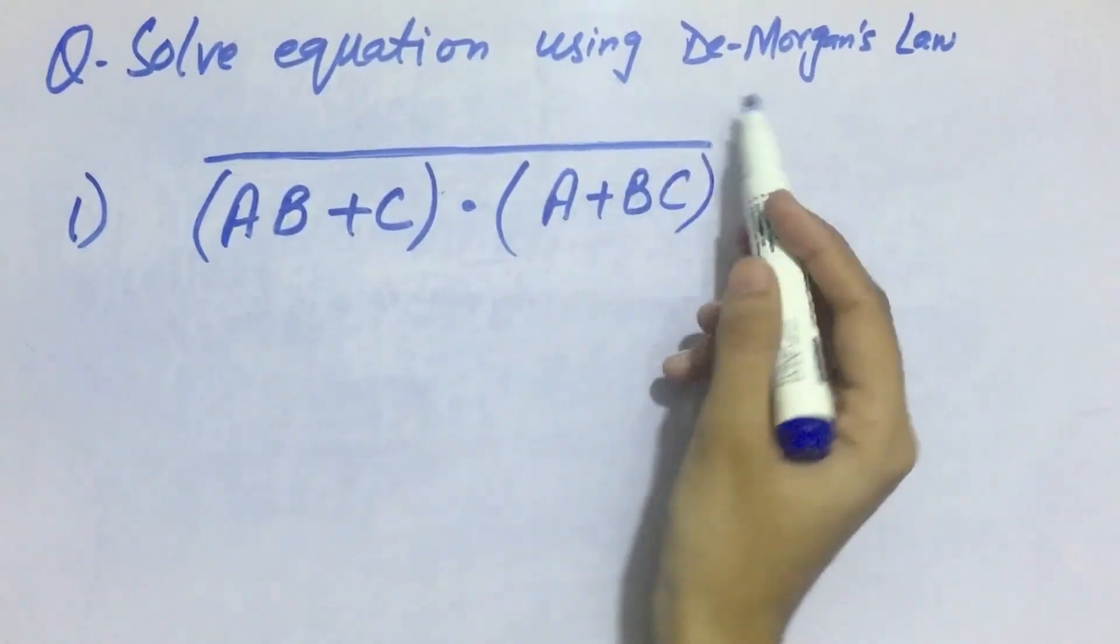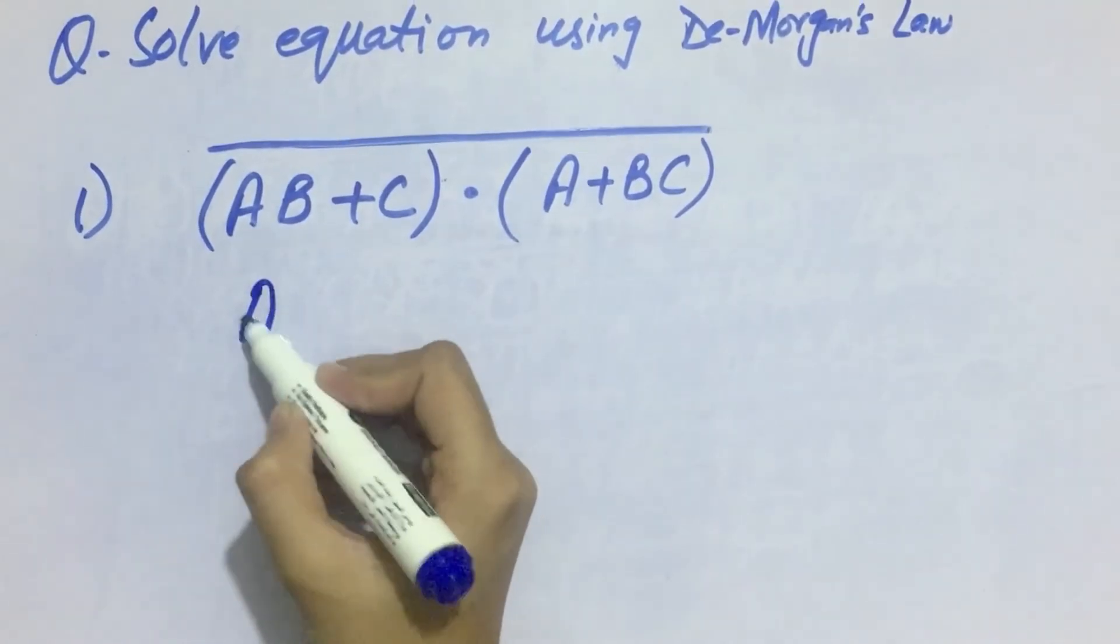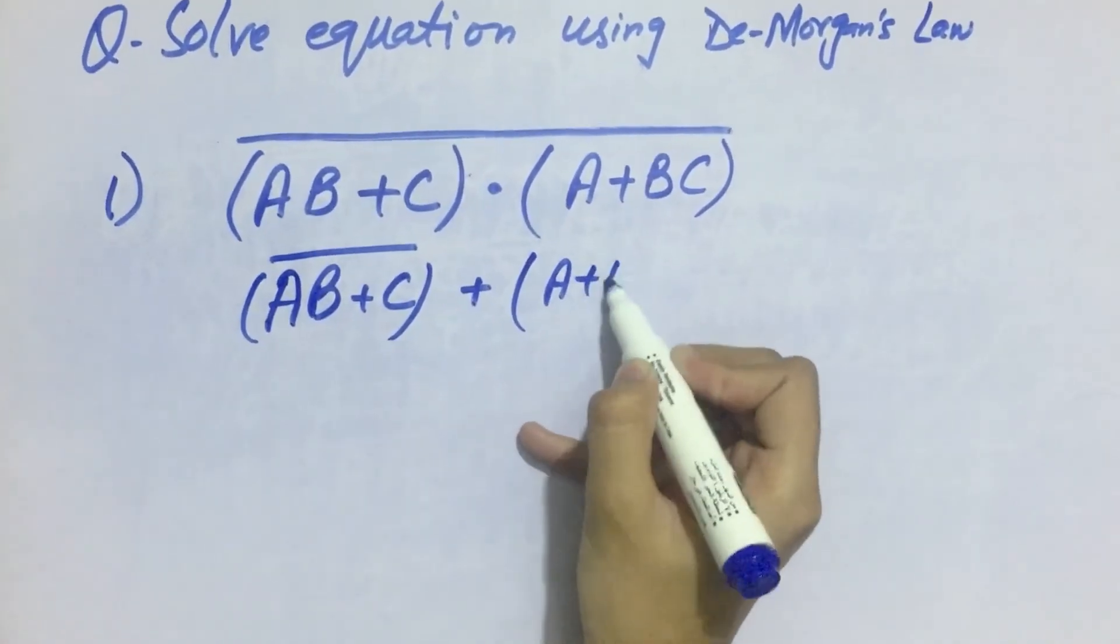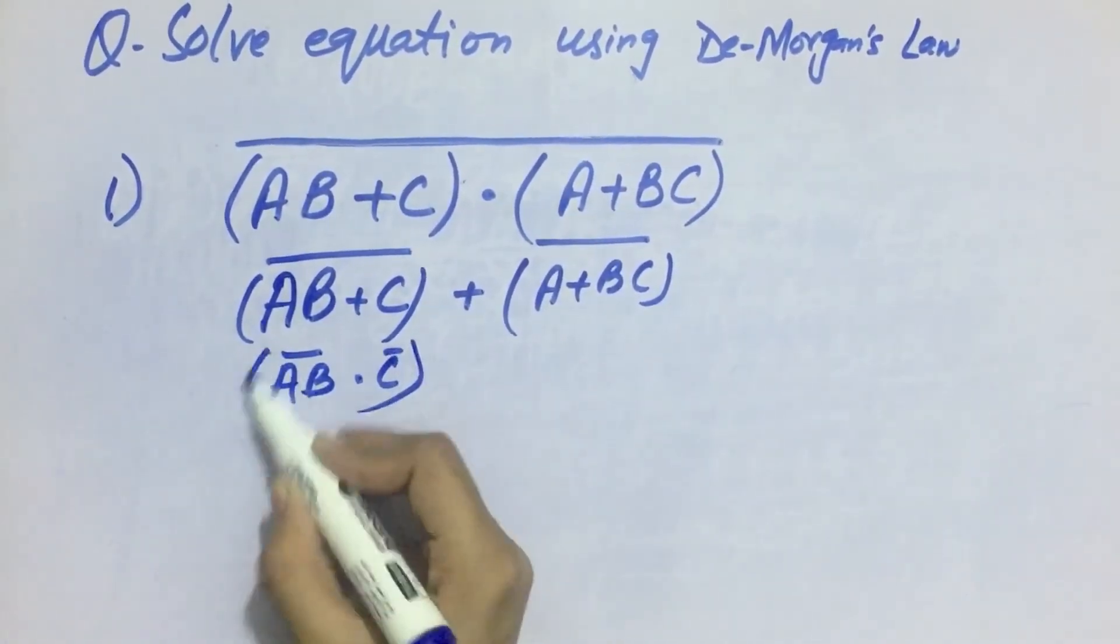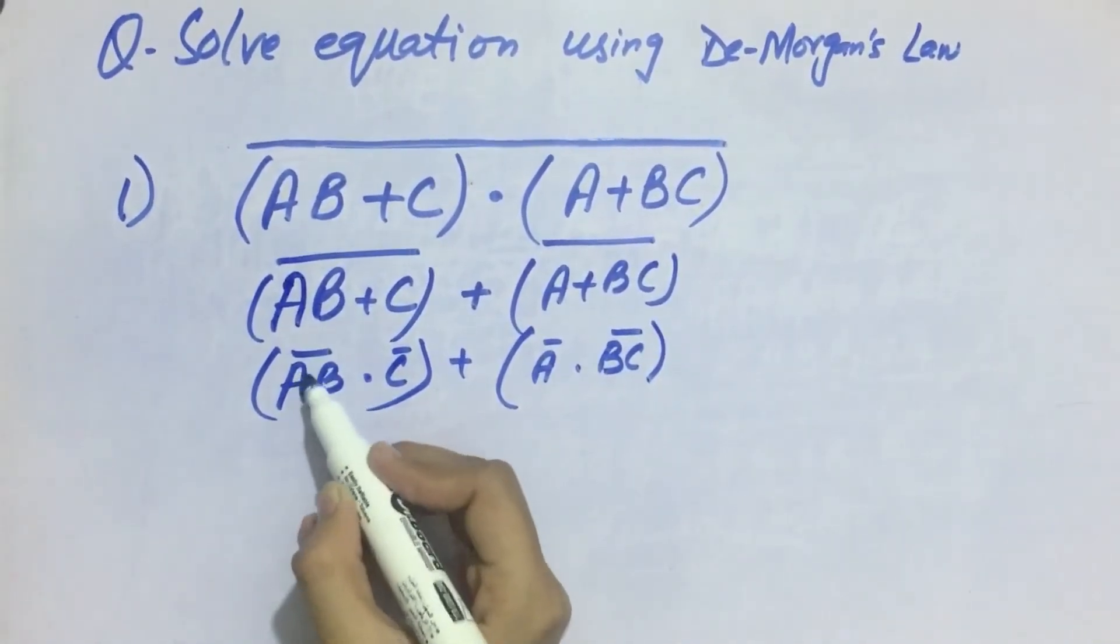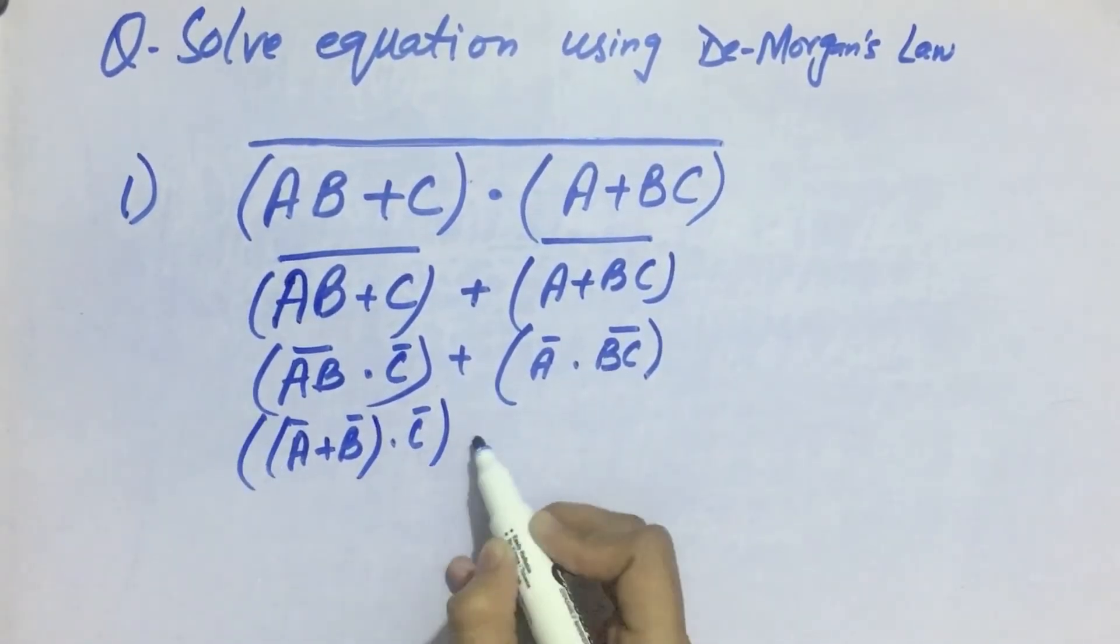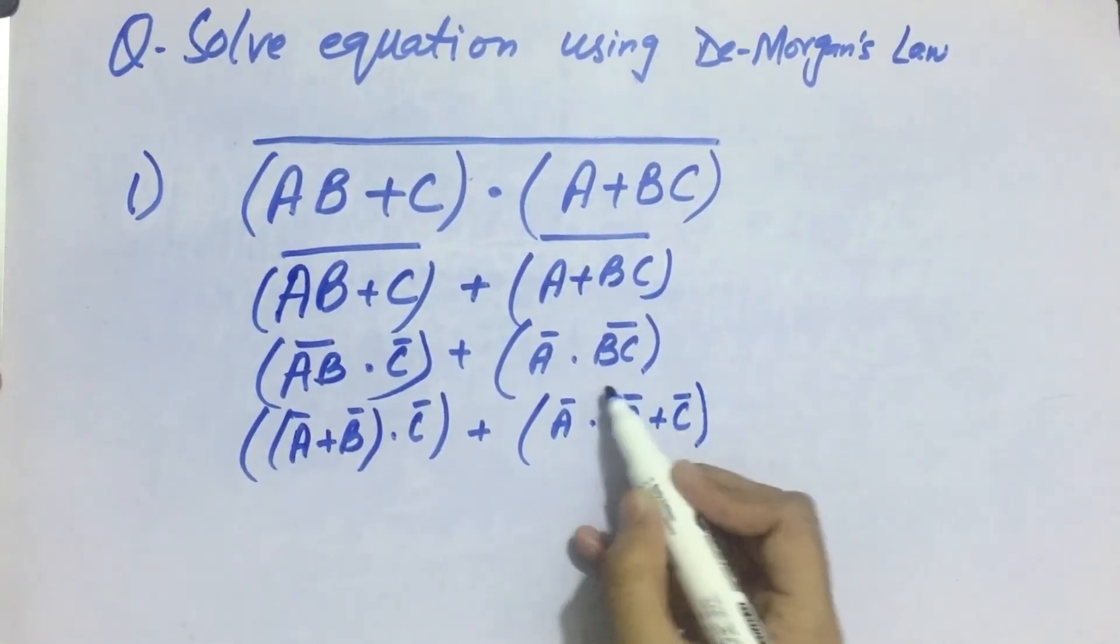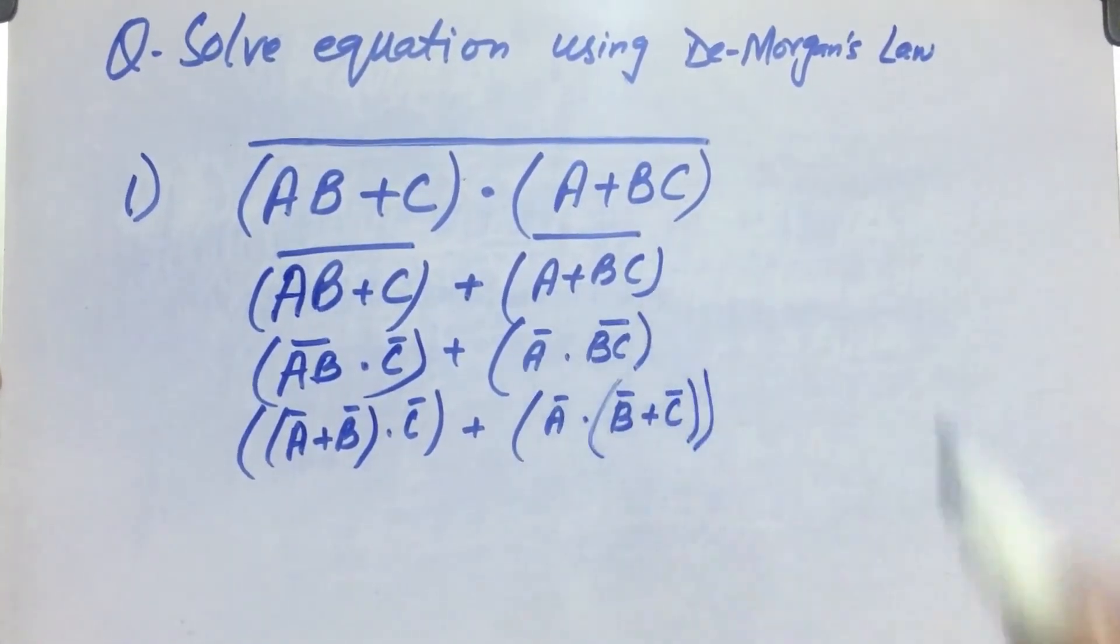Now we will solve this equation using De Morgan's law. In De Morgan's law, we simply have to break the bar and change the sign. So after breaking the bar, we will get AB plus C bar plus changing the sign A plus BC bar. And after breaking this bar, we will get AB bar into C bar plus A bar into BC bar. And after breaking this bar as well, we will get A bar plus B bar into C bar plus A bar into B bar plus C bar whole bar. So this is what we will get after breaking the bar using De Morgan's law.